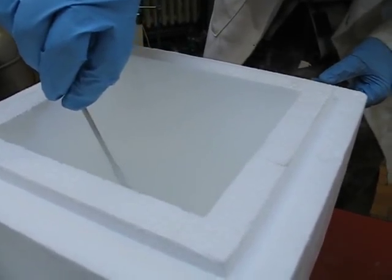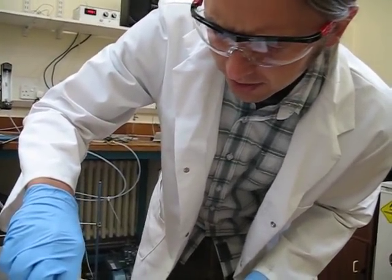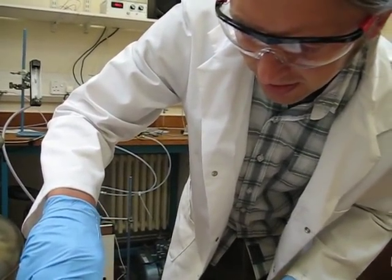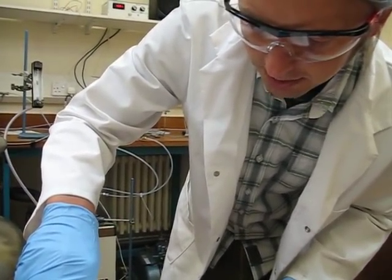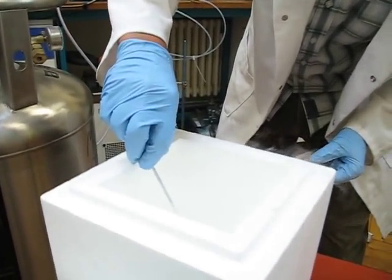So that liquid nitrogen is at 78 Kelvin, so minus 195 degrees centigrade. You can see the liquid nitrogen there is bubbling off or bubbling away, the nitrogen is bubbling out.